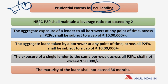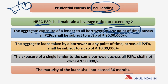You must be wondering why NBFC P2P is mentioned. These P2P lending firms are regulated by RBI because of the high growth in lending on these platforms, and they receive NBFC status as well. So these NBFC P2Ps shall maintain a leverage ratio not exceeding 2. The next norm is that the aggregate exposure of a lender to all borrowers at any point in time across all P2Ps should not exceed Rs. 10 lakh.